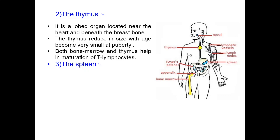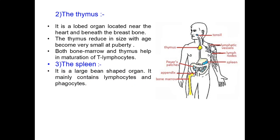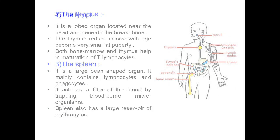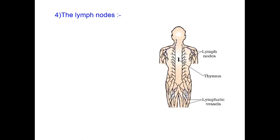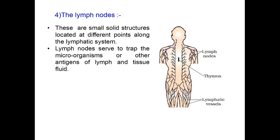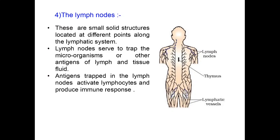The spleen is a large bean-shaped organ. It mainly contains lymphocytes and phagocytes. It acts as a filter of the blood by trapping blood-borne microorganisms, and also has a large reservoir of erythrocytes. The lymph nodes are small solid structures located at different points along the lymphatic system. They serve to trap microorganisms or other antigens from lymph and tissue fluid, and antigens trapped in the lymph nodes activate lymphocytes to produce immune response.